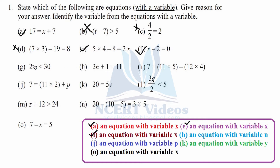For part g, straight away cut it — there is no equal sign, it is a less than sign, so it doesn't qualify. For part h, again you can see it has an equal sign, left hand side and right hand side, and it has a variable. Therefore it meets our criteria — an equation with variable x is the solution.